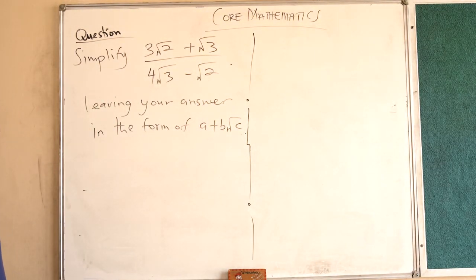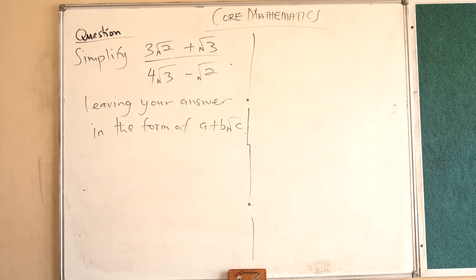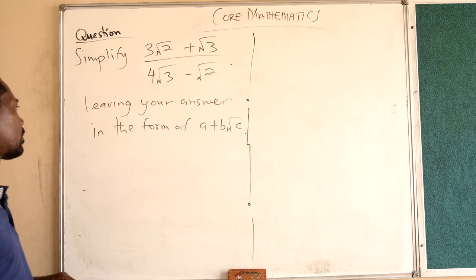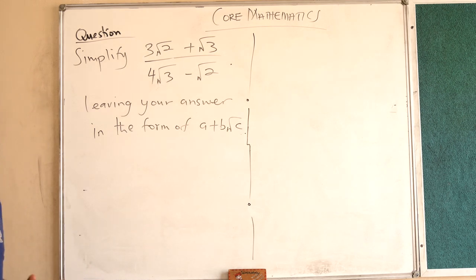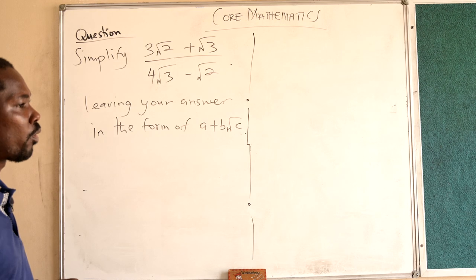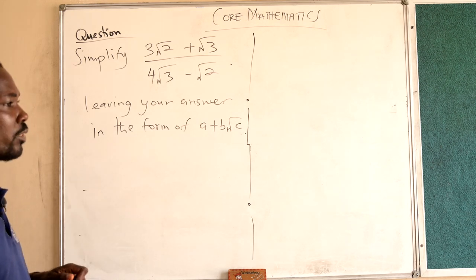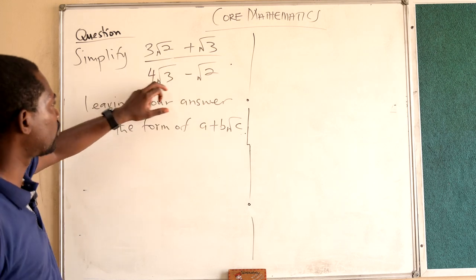Let us try to handle this question. Simplify 3√2 + √3 over 4√3 − √2, and leave the answer in the form A + B√C. Now, when you are given such a question, you look for the conjugate of the denominator.